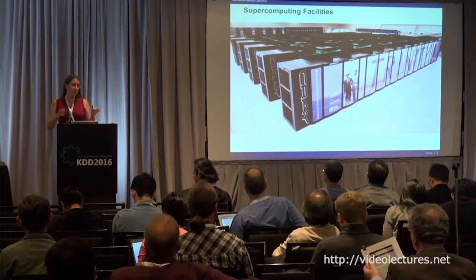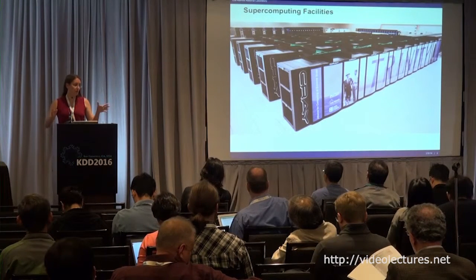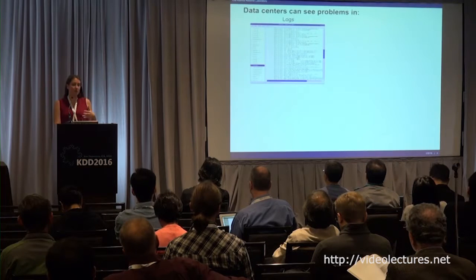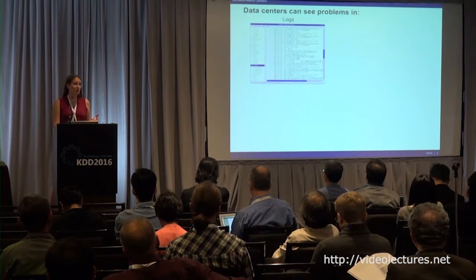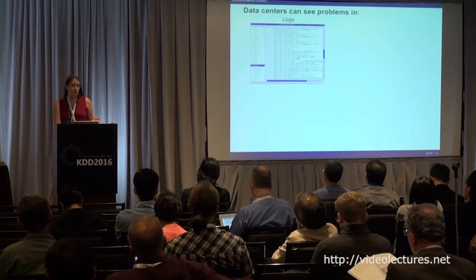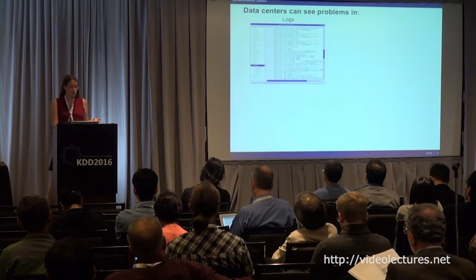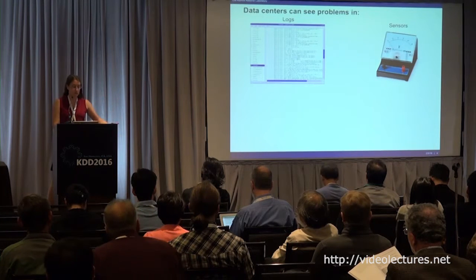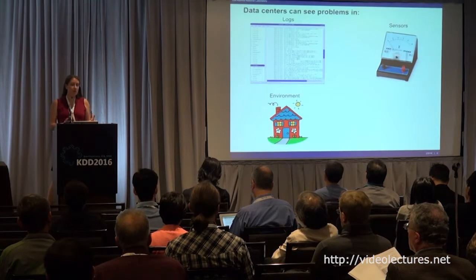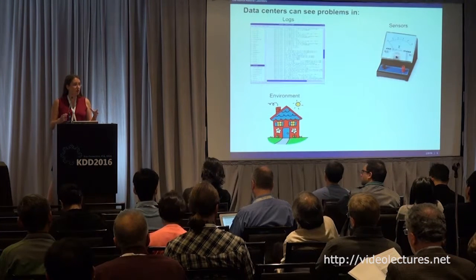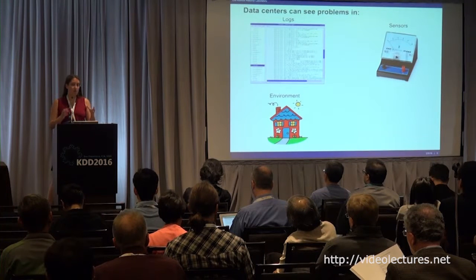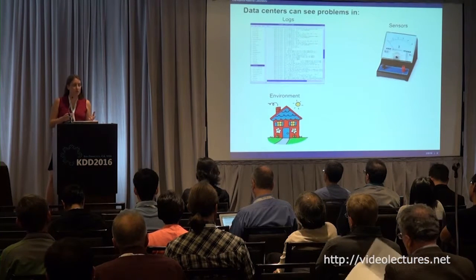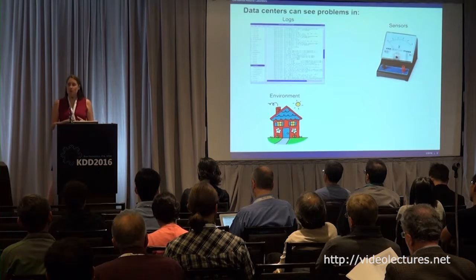The current machine is Trinity, which is literally sitting in about a football-sized field room. We've got these gigantic facilities, and our data centers can see a variety of different kinds of problems that we'd like to detect and mitigate. One source of problems is the actual logs — things like syslogs and environmental sensors. There's also the actual environment the machine is in, including room temperature, machine location, altitude. Specifically at Los Alamos, we're at a very high altitude, so you can actually see effects of that as well.